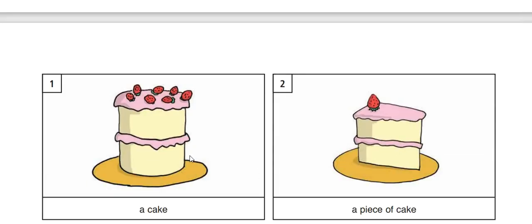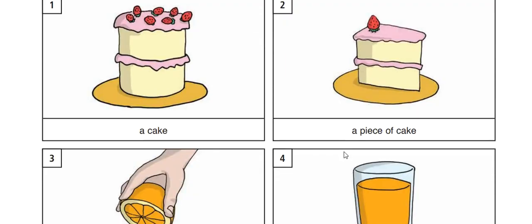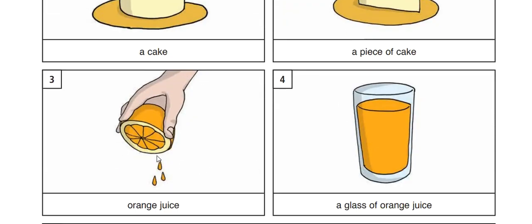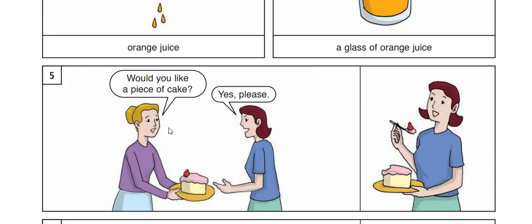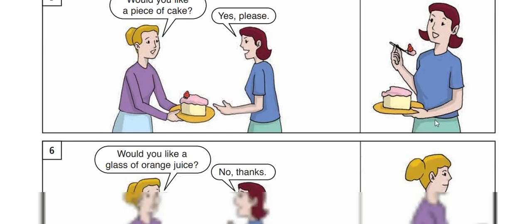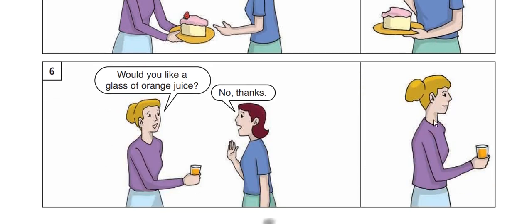Picture one: a cake. Picture two: a piece of cake. Picture three: orange juice. Picture four: a glass of orange juice. Would you like a piece of cake? Yes, please. She is eating a cake. Would you like a glass of orange juice? No, thanks.